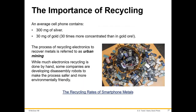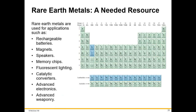Here's an example about recycling and what's actually in a cell phone. Your average cell phone has 300 milligrams of silver and 30 milligrams of gold — maybe that's why they're so expensive! It's important to recycle because there's a lot of valuable material in your phone. Batteries, magnets, speakers, chips, lighting, converters, and advanced electronics all require rare earth metals. There's a lot of chemistry involved in your smartphone and a lot of valuable elements there as well.